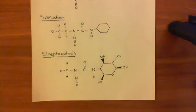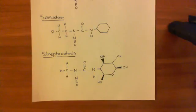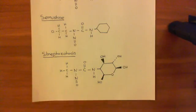So those are the four examples of nitrosoureas: carmustine, lomustine, semustine, and streptozotocin. In the next video, we'll turn our attention to their mechanism of action.